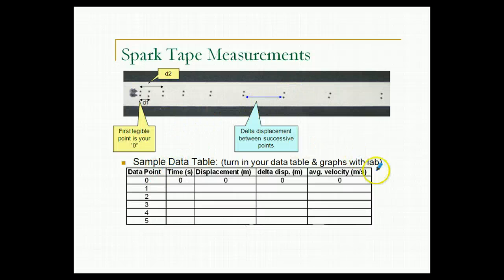So what we're going to do is generate a data table with these following columns. We're going to locate our first legible set of points and label it as data point zero. We'll say that's our beginning point, and time will equal zero, and that will be our reference point for measurement of displacement. So label this first point zero, and then the next point one, two, three, four, five, on down the tape, all the way to 20.